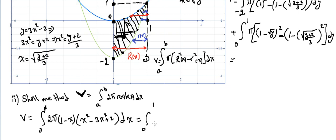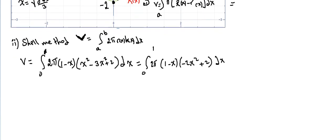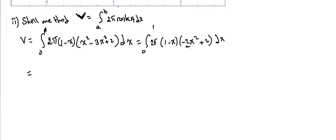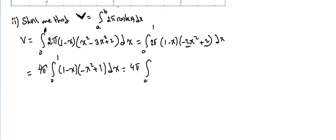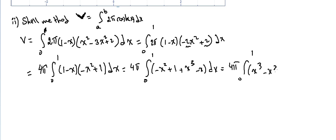This is straightforward to find. It's the integral from 0 to 1 of 2π times (1 minus x) times (minus 2x squared plus ... x squared minus 3x squared plus 2) dx. Let's take the 2π outside, and since we can factor out 2 as a common factor and multiply with 2π, it becomes 4π outside. The integral from 0 to 1 of (1 minus x)(minus x squared plus 1) dx. Expanding: minus x squared plus 1 minus (plus x cubed minus x) dx, which equals 4π times the integral from 0 to 1 of x cubed minus x squared minus x plus 1 dx.